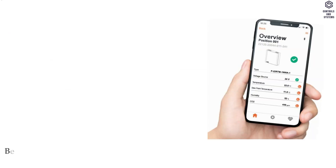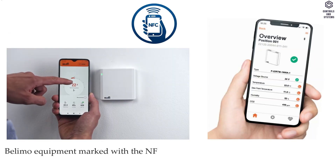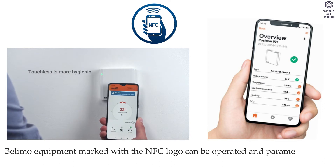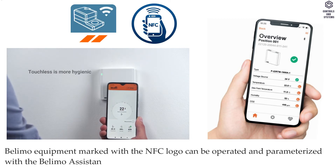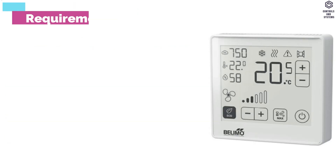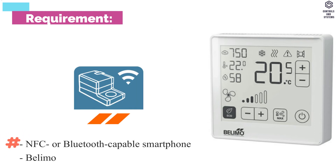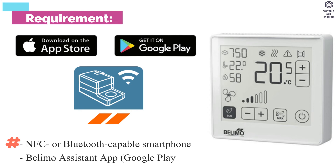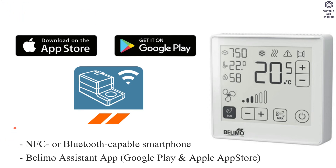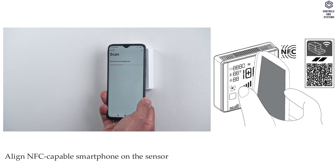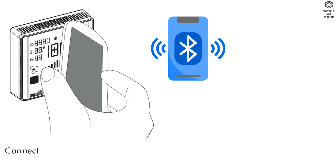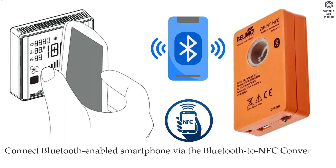NFC connection: Belimo equipment marked with the NFC logo can be operated and parameterized with the Belimo Assistant App. Requirement: NFC or Bluetooth capable smartphone; Belimo Assistant App available on Google Play and Apple App Store. Align the NFC-capable smartphone on the sensor so that both NFC antennas are superposed. Alternatively, connect a Bluetooth-enabled smartphone via the Bluetooth to NFC converter ZIP BE NFC device to the sensor.